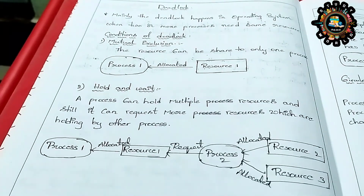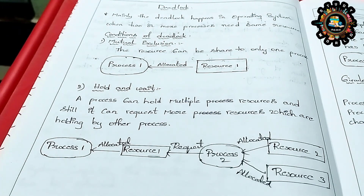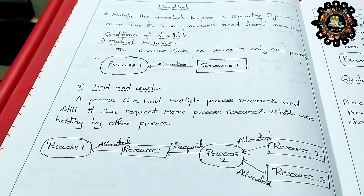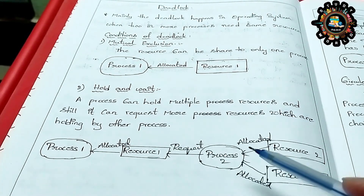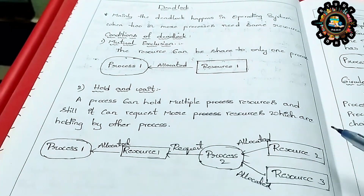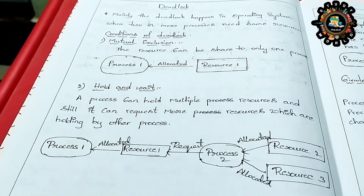The next condition is Hold and Wait. Hold and Wait involves processes P1 and P2. There are two processes and three resources. One resource is allocated to one process, resource 2 to one process, and resource 3 to one process. A process can make a request, but the resource may already be held by another process.